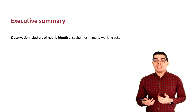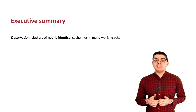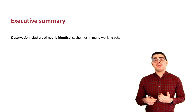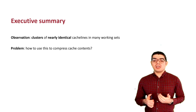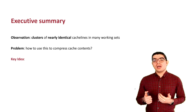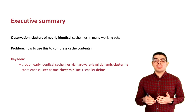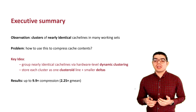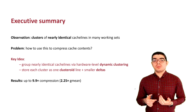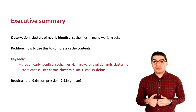The observation we have is that there are clusters of cache lines in the working set that are similar to each other but not identical, and no prior work is taking advantage of this inefficiency. The problem we are solving is how to use this to compress the cache. Our evaluation shows that we achieve 2.25 times average compression and up to 9.9 times, which is significantly higher than prior proposals.